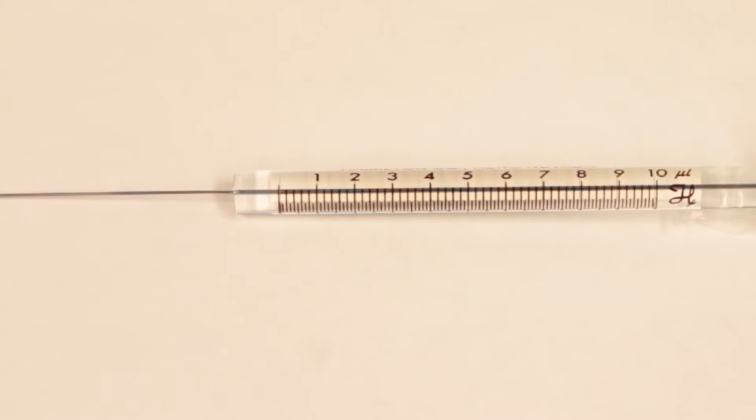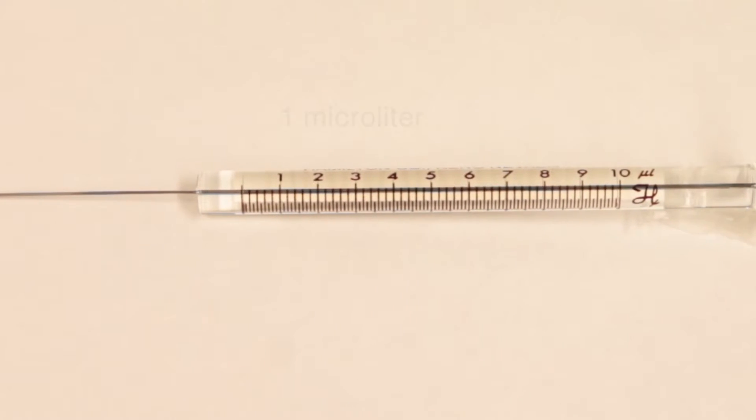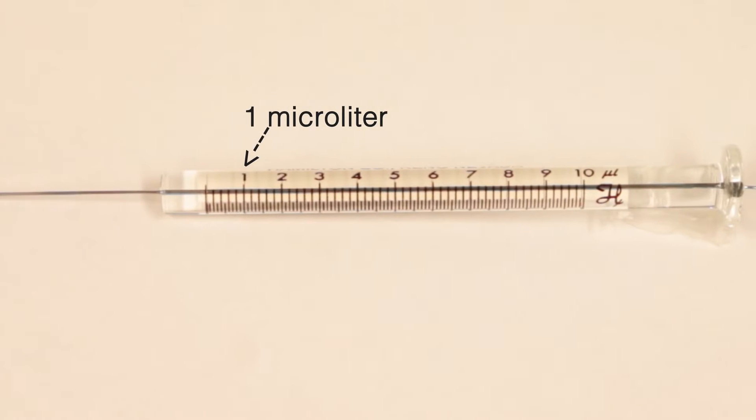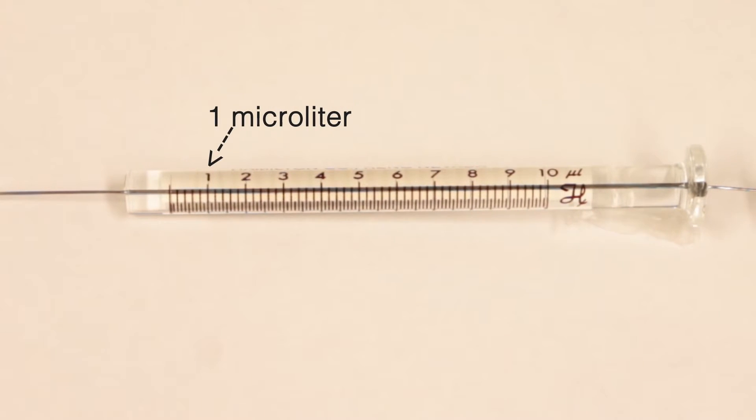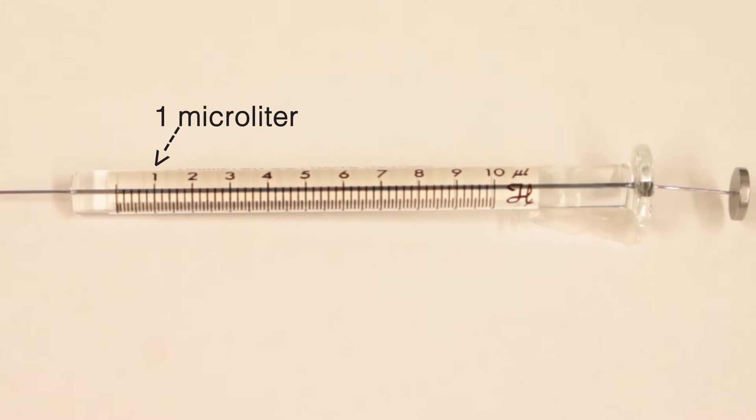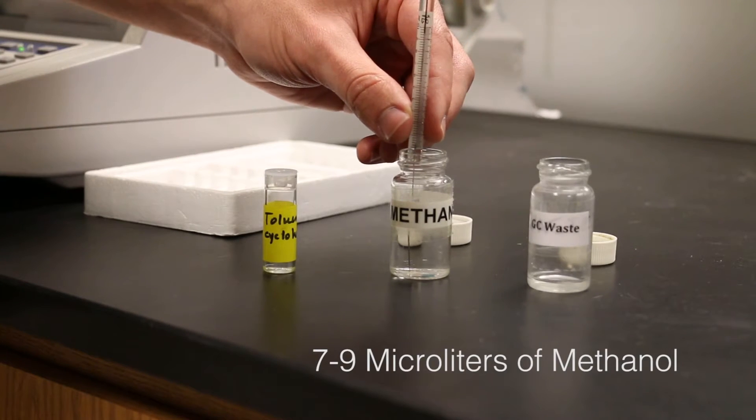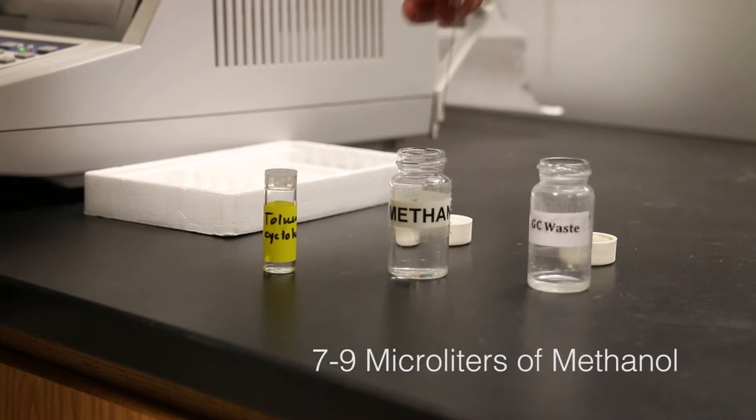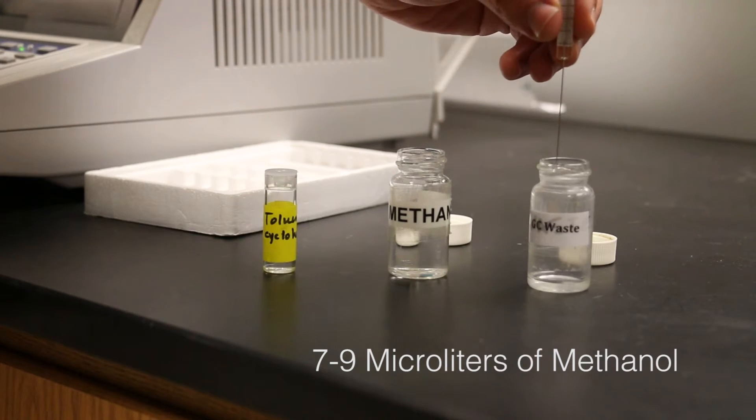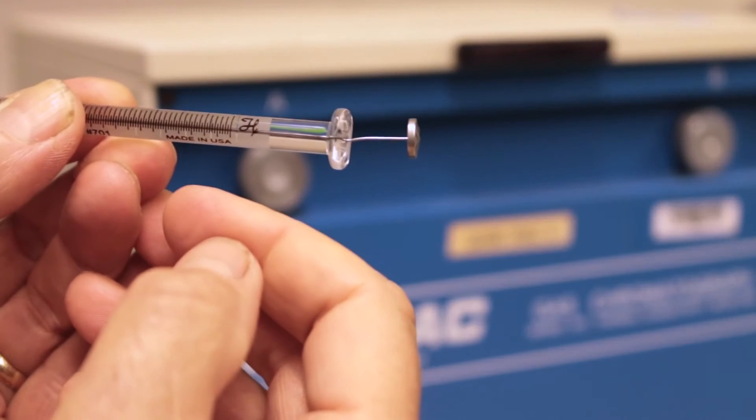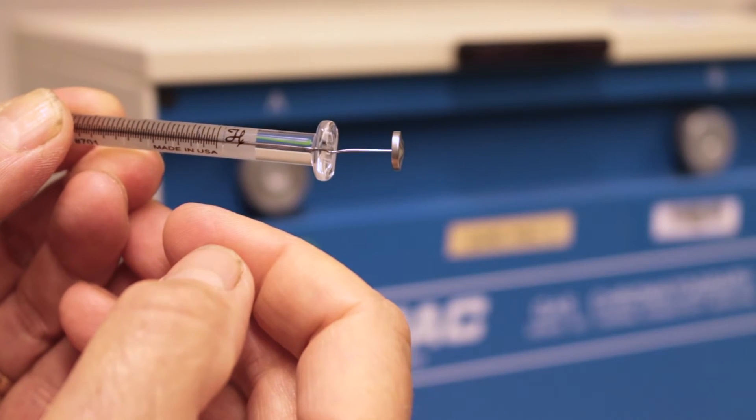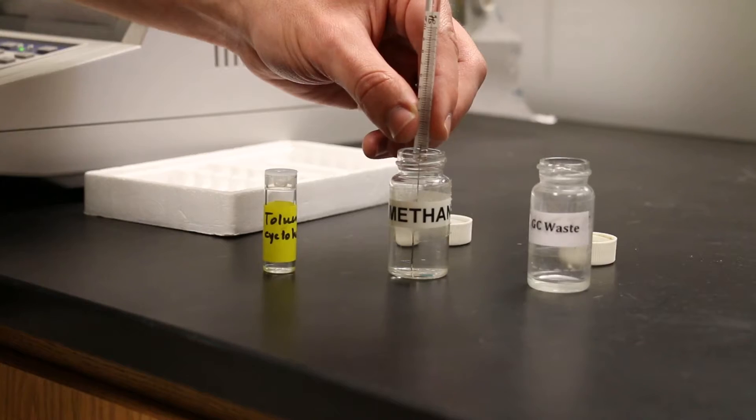In our labs, you will use a 10 microliter syringe, but you will usually inject only one microliter of your sample. Make sure the syringe is clean by first rinsing it. Rinse the syringe by pulling up 7 to 9 microliters of methanol and expelling the rinse into the waste container. Notice that the plunger of the syringe does not end up flush with the barrel when fully depressed.